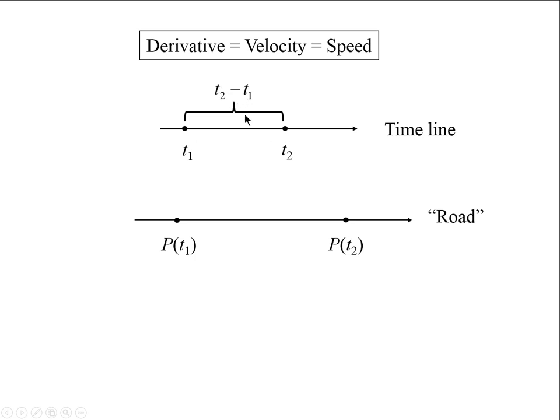Which is t2 minus t1, and the distance traveled, which is P(t2) minus P(t1). Then we divide the distance traveled by the time which it took to go from one point to another point.